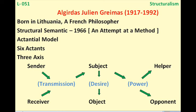To recap the six actants: subject is the hero; object could be his love interest or any particular goal; helper is the person who assists the hero, similar to the helper in Vladimir Propp's model; opponent is like a villain who puts hurdles in the way of the subject; and sender and receiver provide some sort of target or mission to the subject.